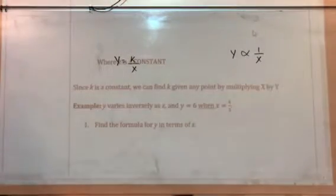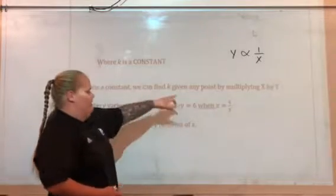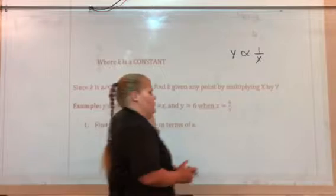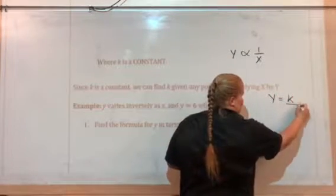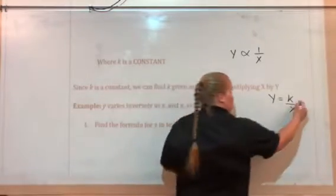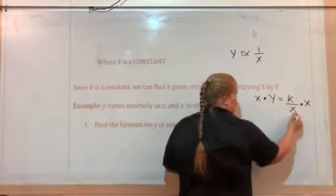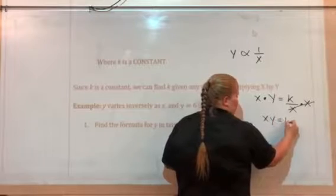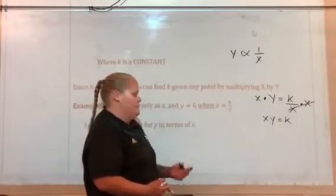Since k is a constant, we can find k given any point by multiplying x by y. So if this is our y equals k over x, if we wanted to solve for k, we would multiply both sides of the equation by x. These would cancel, and I'd have x times y equals k.